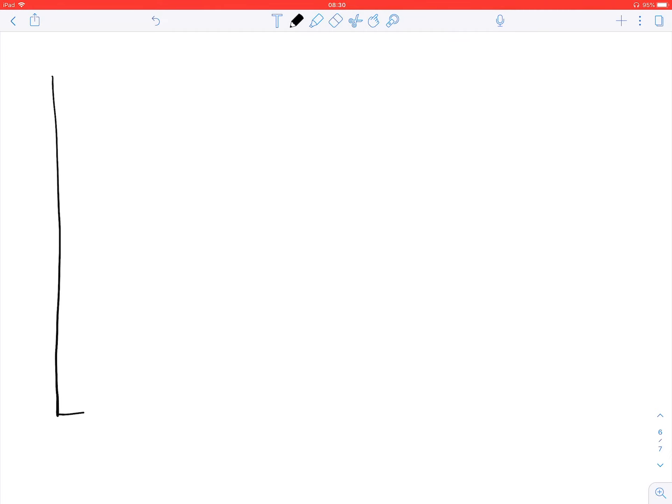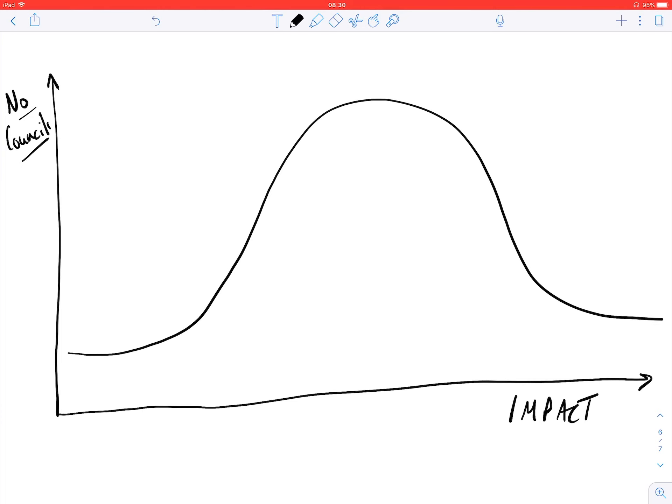Across the landscape of councils, we can actually map out the impact they have and the number of councils that have that impact. By doing that, we can see the attributes of the ones that have the most impact. As you'd expect, the distribution is this normal distribution, where we've got a small number of councils making a high impact and a small amount making not much impact.